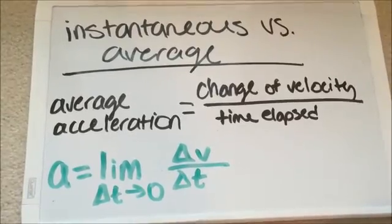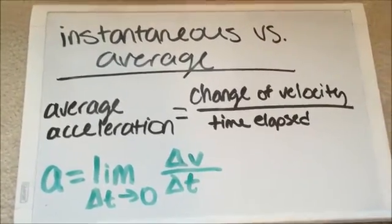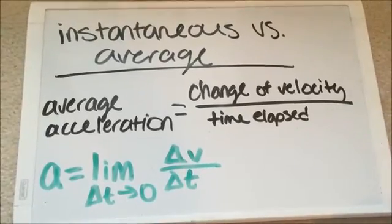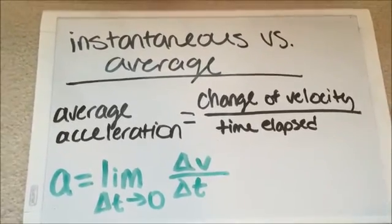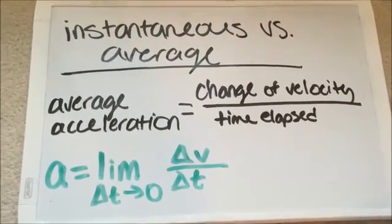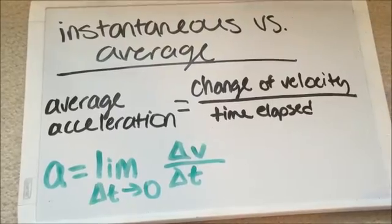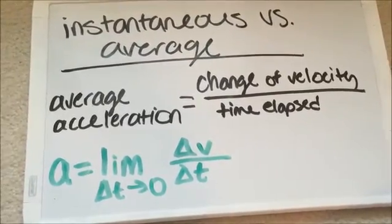Instantaneous versus average. Instantaneous refers to a quantity at that instant in time, while average refers to the average quantity over time elapsed. So, for instance, average acceleration is equal to the change in velocity over time elapsed, while instantaneous acceleration is the limit as the change in t approaches zero of change in velocity over change in time.